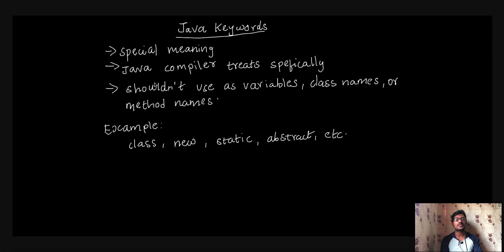Next point is, Java Compiler treats keywords specifically. Java Compiler treats a specific word, treats a specific keyword. We use that keyword.